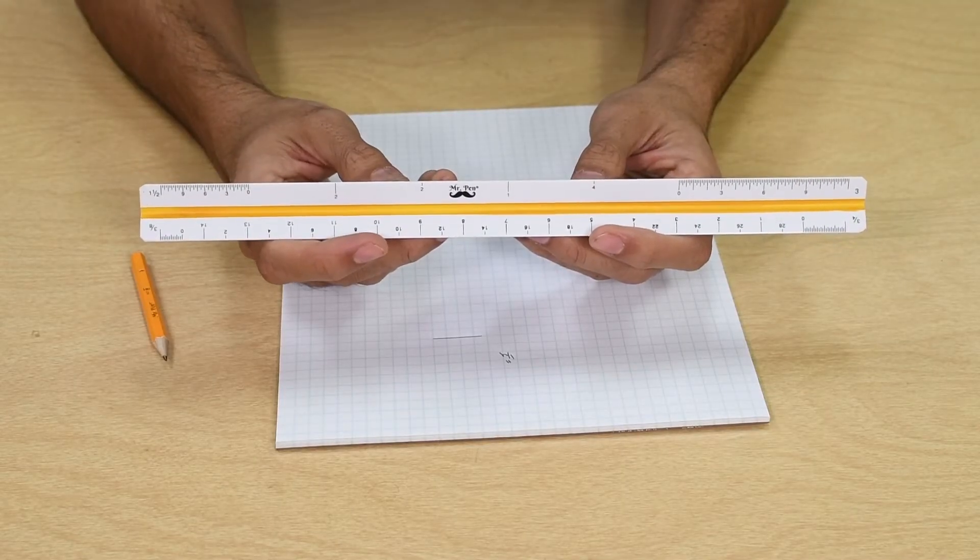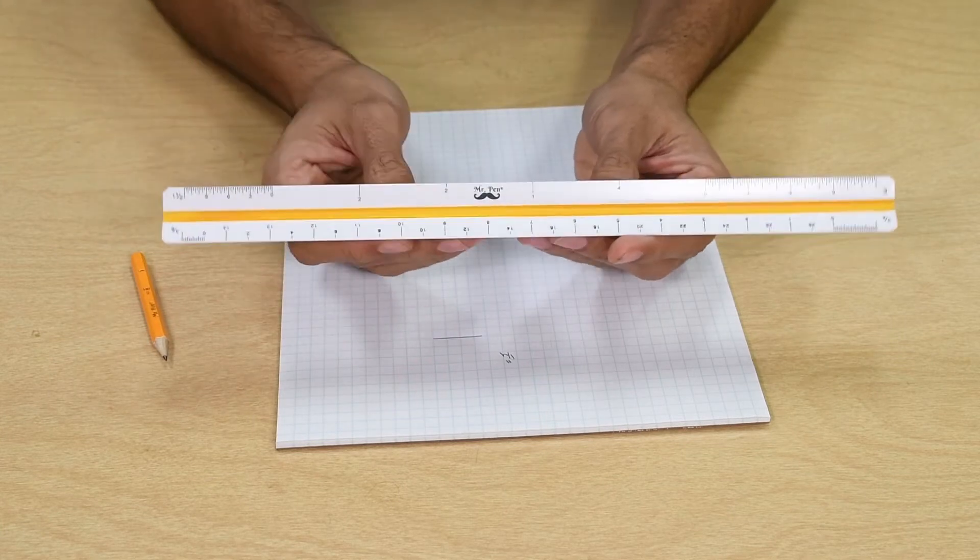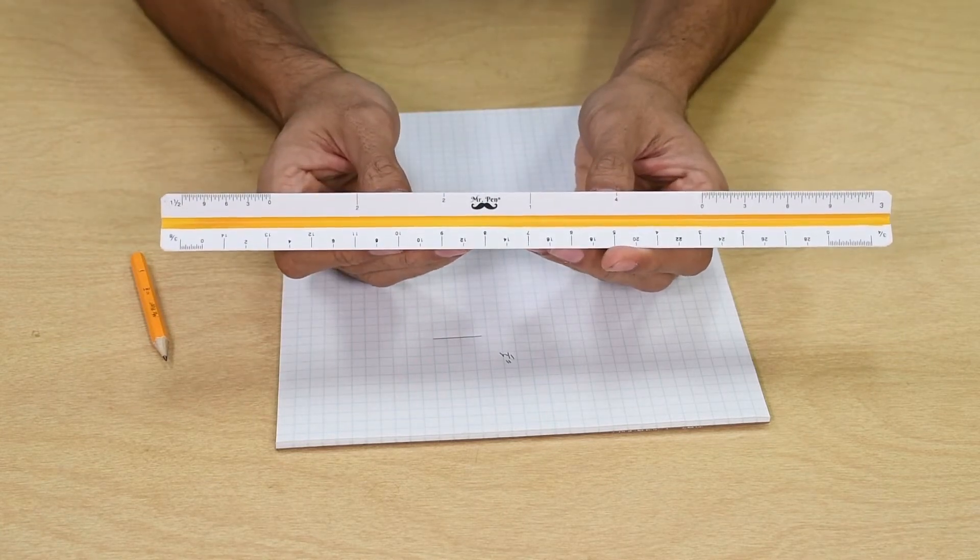Architect scales are used to draw something large and scale it down in order to get it on a piece of paper.